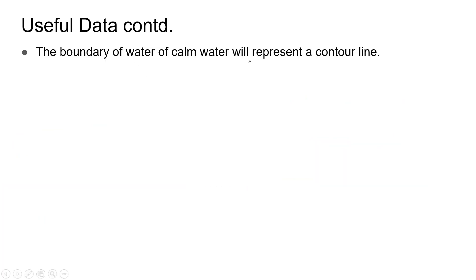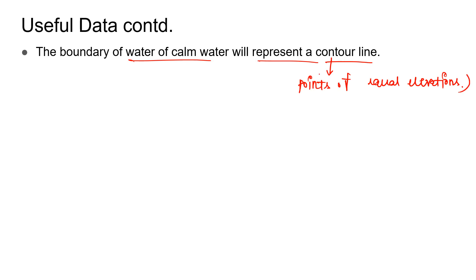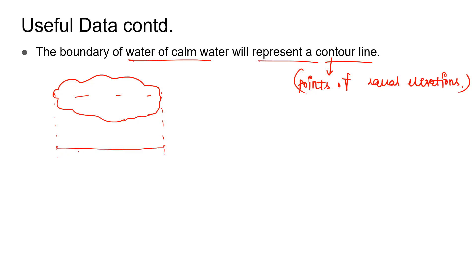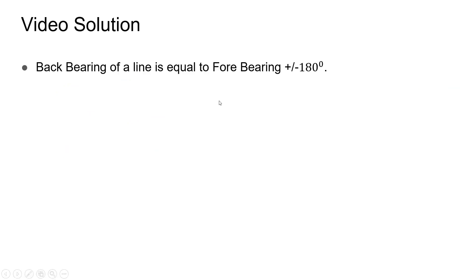The boundary of water of a calm water pond will represent a contour line. A contour line represents points of equal elevation. Since in still water there is virtually no change in elevation, if we draw the projection of the pond boundary, we get a line — essentially a contour of that pond — because there is no significant change in elevation. So the boundary of a calm water pond represents a contour line.